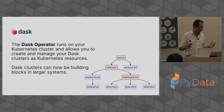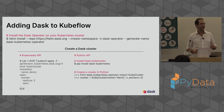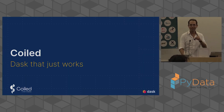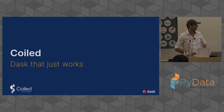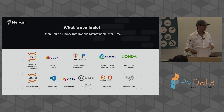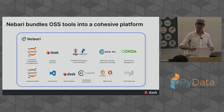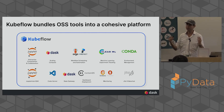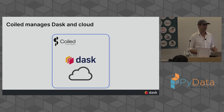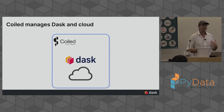Coiled. I've got three minutes — putting on my for-profit hat. Nebari has all these tools; Saturn has a different set; Kubeflow, same idea. Coiled — not so much. Coiled is mostly just Dask in the cloud. We do far, far less for you. We only do Dask, but we do it really well. What we actually really care about is working outside other things.